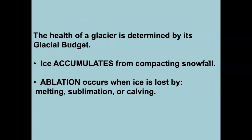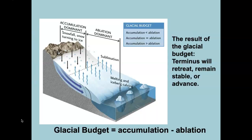There's a term used when talking about glaciers getting bigger and smaller, and that's the glacial budget. When ice is accumulating from compacting snow, we're adding to that glacial budget. Ablation is when ice is lost — either by melting, sublimation, or calving. Sublimation is where a solid turns into a gas, kind of like evaporation. Calving is where the end of the glacier breaks off into water.